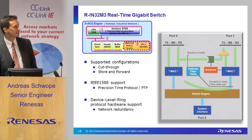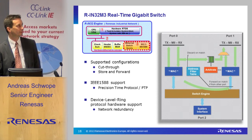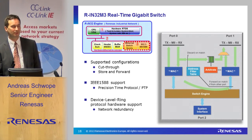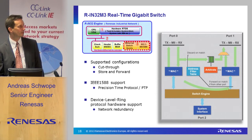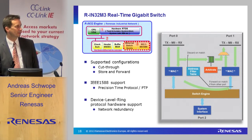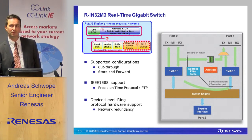The third important IP is the internal Gigabit switch — more or less a standard IP — but implemented in such a way that it supports different real-time functions. Cut-through store-and-forward is one of the most important things, and also IEEE 1588 support, which is very important for synchronization between different slaves.